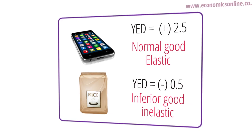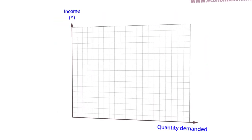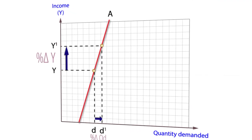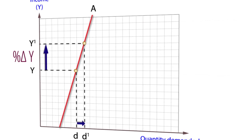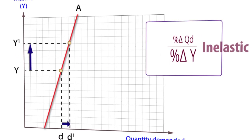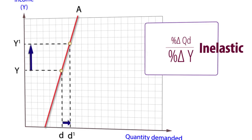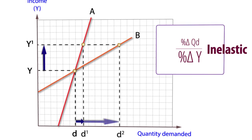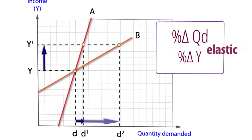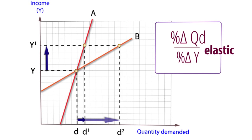Income elasticity can be visualized through Engel curves. Engel curve A slopes upwards and it is steep, which indicates that the quantity demanded for good A changes by a smaller proportion than income, indicating that it is a normal good with an inelastic YED.